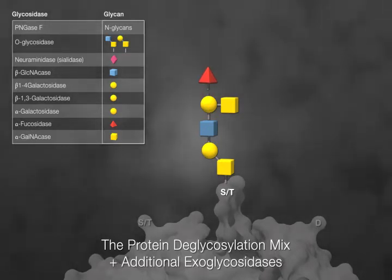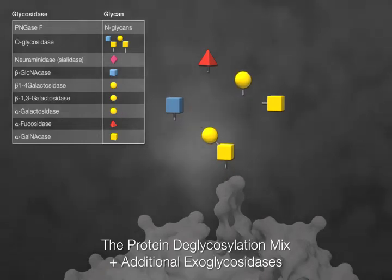In this example, fucosidase and alpha-galactosidase are used and the resistant glycan is removed.